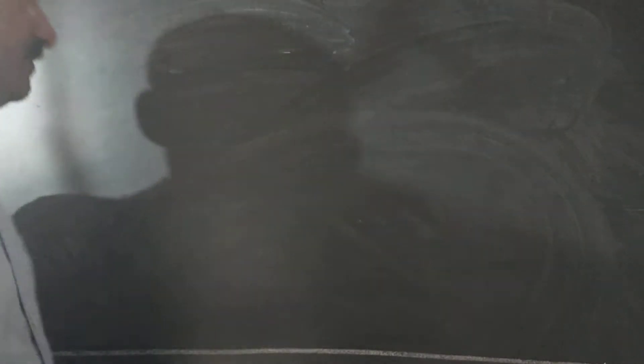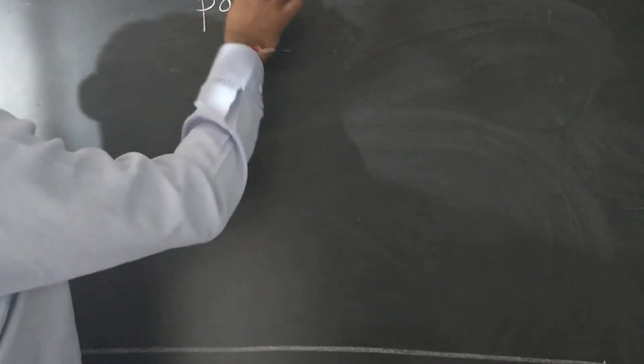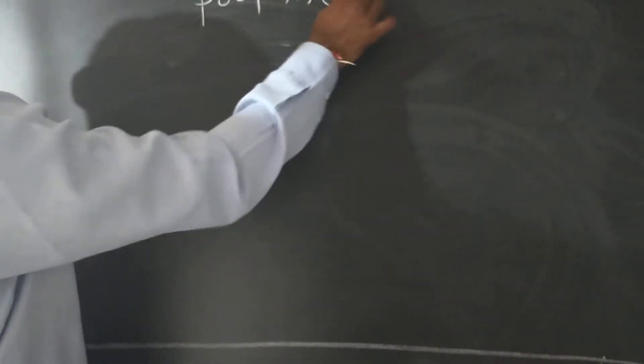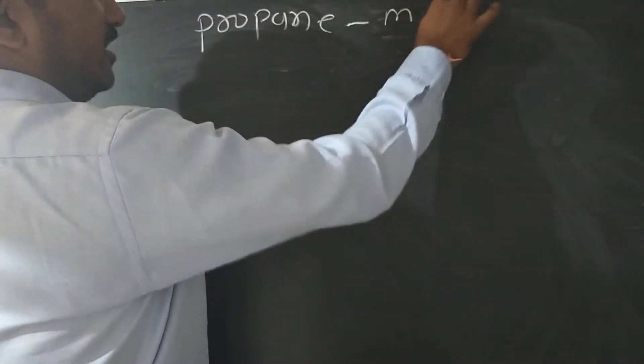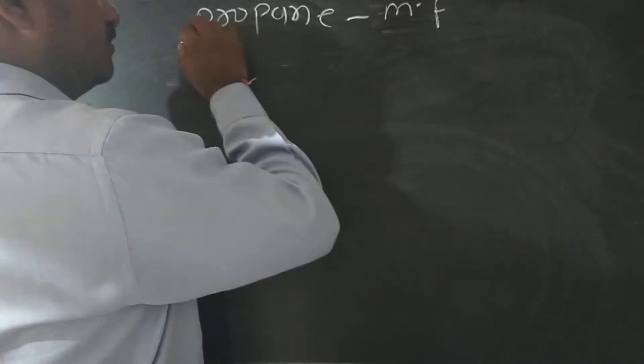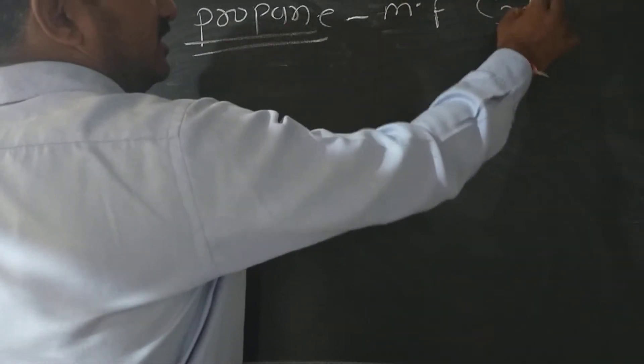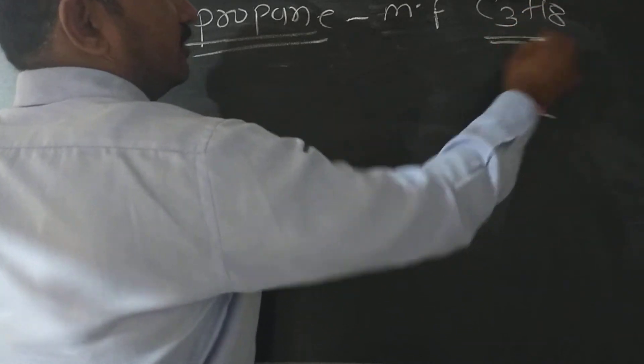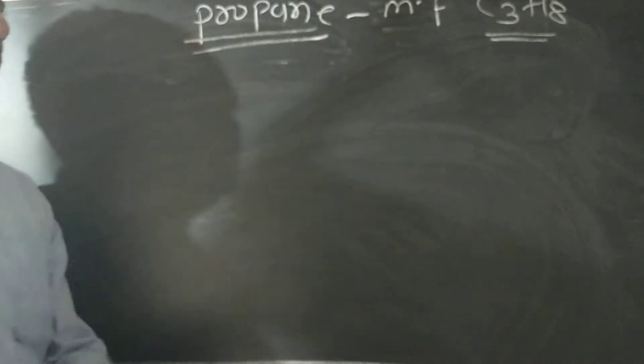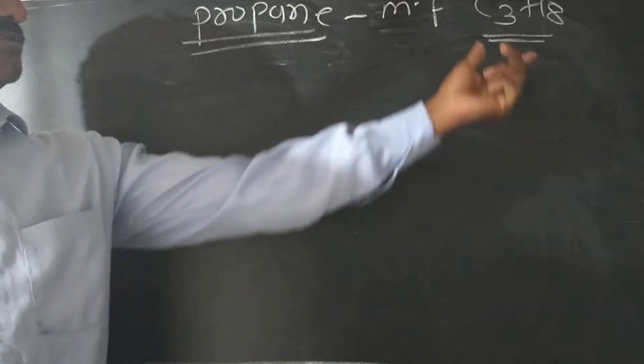There is a question in the book: what is the molecular formula of propane? The molecular formula of propane is C3H8 — sorry, C3H8. We have C3H8, and we need to draw the structural formula of propane.